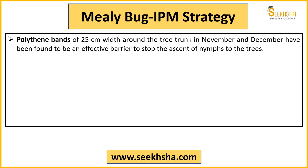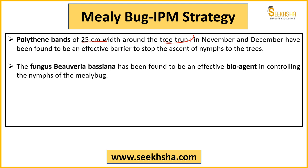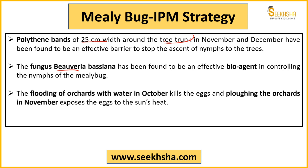Agar hum is ki management strategy ki baat karein toh aap polythene band ko istemal kar sakte ho. Basically polythene band kya hota hai ki aap polythene ka use karke uske jo trunk hai, tree trunk ko cover kar do — 25 cm ki width aapne bana deni hai. Yeh November aur December ke maheene ke andar aap karein jo isko kaafi zyada effective bana dega. Uske baad isme aap Beauveria bassiana fungus ka istemal kar sakte hain — yeh ek kaafi acha bio agent hai. October ke maheene ke andar agar aap jo mango orchard hai uski flooding water se kar dete ho toh usse jo eggs hain yeh is particular pest ke eggs ko kill kar sakte ho.